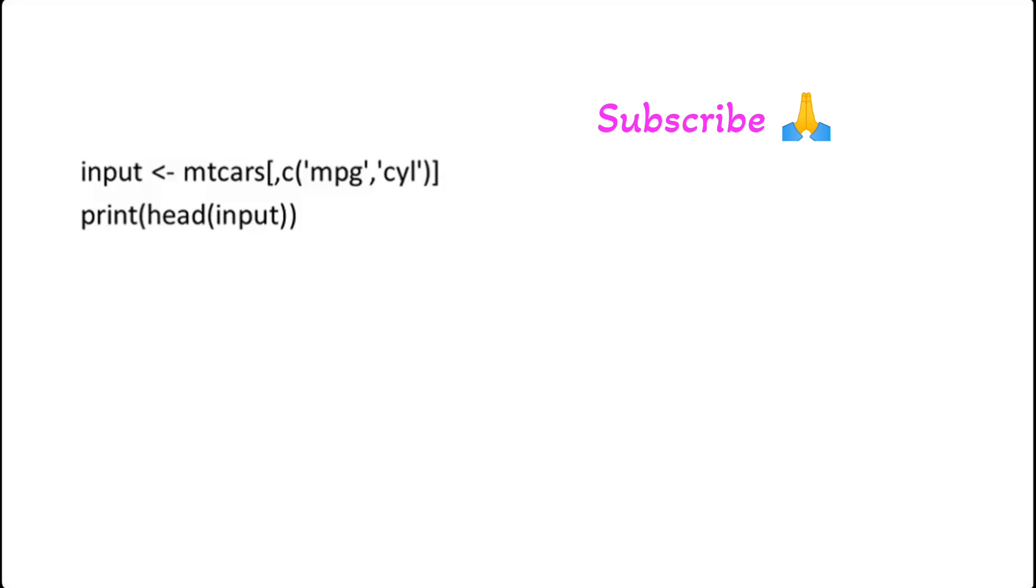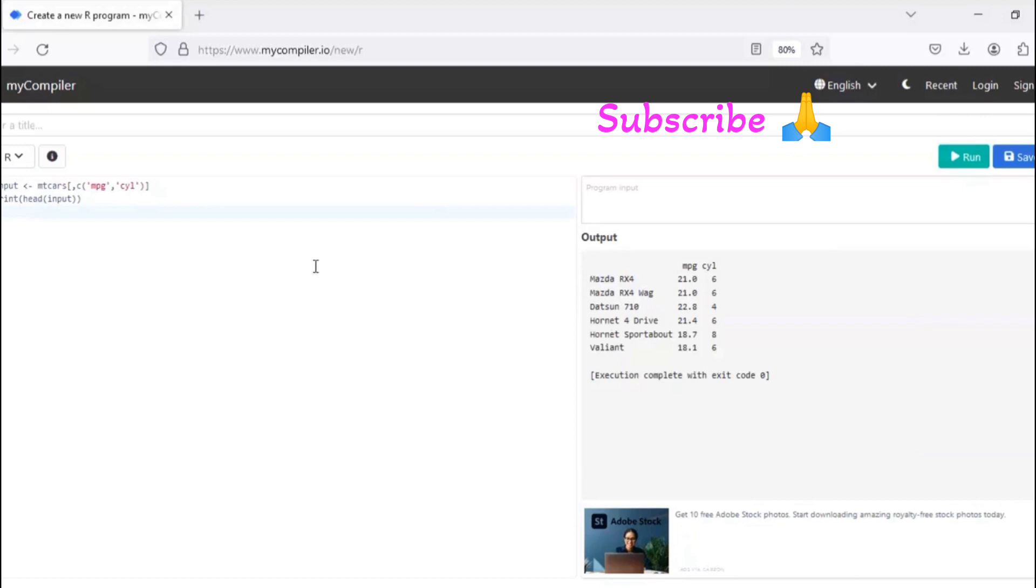Compiler again and then check the output. So here in this case the mtcars data we are getting for six vehicles with miles per gallon and the cylinders available in those vehicles.